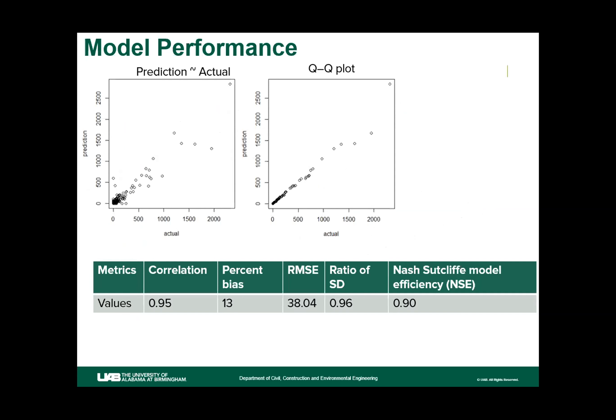Regarding model performance, the scatter plot on the left shows the relationship between predicted and actual deaths. At higher death counts, the model was able to predict more accurately. The QQ plot shows a linear relationship between predicted and actual observed deaths. The correlation between prediction and actual deaths was 0.95, the percent bias was 13, the ratio of standard deviation was 0.9 (ideally 1), and the Nash efficiency was also 0.9.